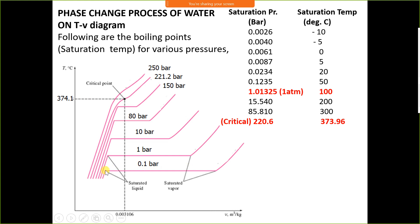The saturated liquid points, when joined with the critical point, give the liquid saturation line. The saturated vapour points, when joined with the critical point, give the saturation vapour line. The intersection of these two lines is the critical point, forming a dome called the saturation curve.